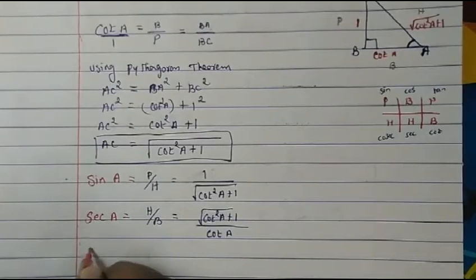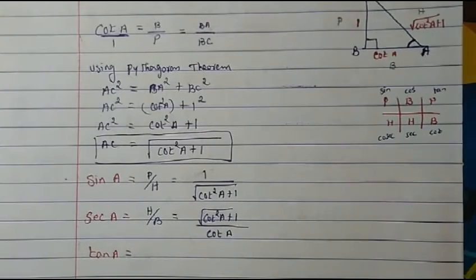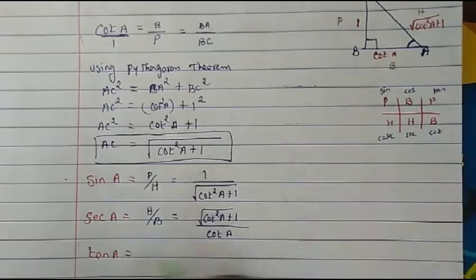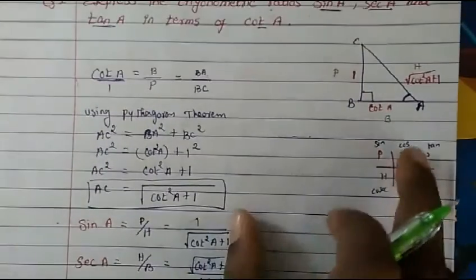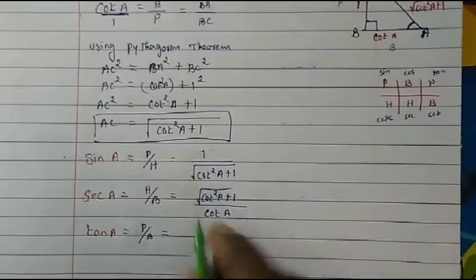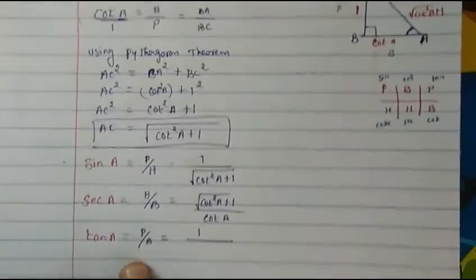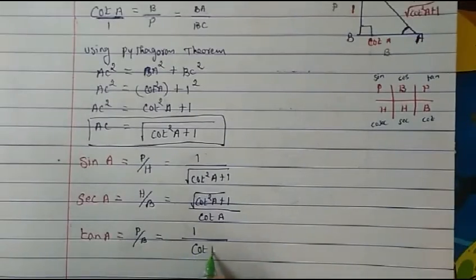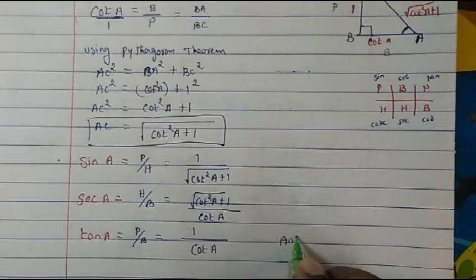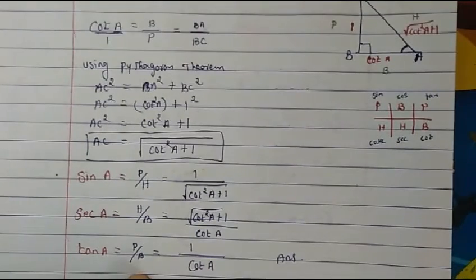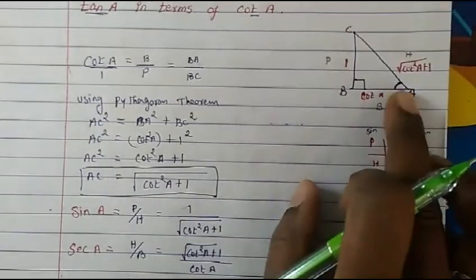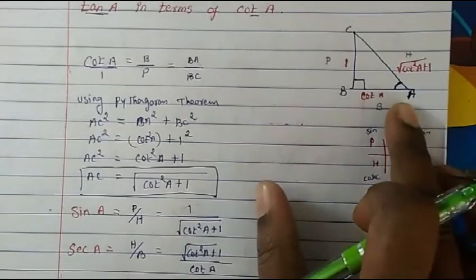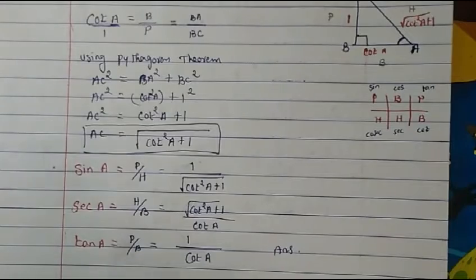Now for tan A. Tan A is perpendicular upon base. Perpendicular is 1 and base is cot A. So tan A equals 1 over cot A. This is our answer. Isn't it easy? You just complete the triangle, then write the values. Now I will show you another method.